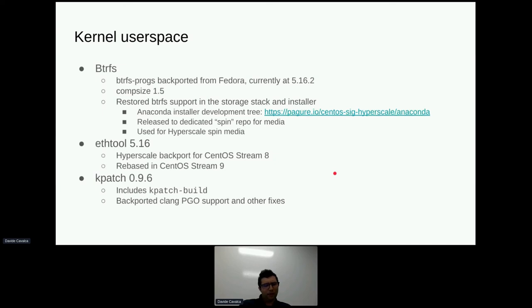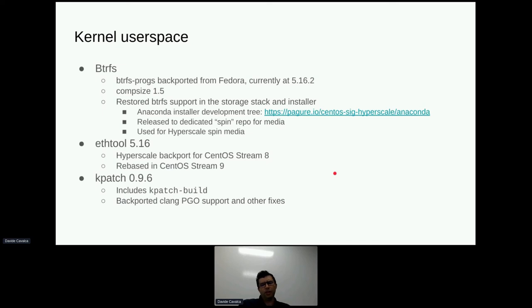Recently we also updated a few more packages. We updated Kpatch, which implements the kernel live patching framework — this is also something we use in production at Meta. CentOS already ships with Kpatch, but it doesn't include the ability to build packaged patches, so we included support for kpatch-build so one can build their own kernel patches. We also backported support for Clang PGO optimizations and a number of other fixes that were made upstream.